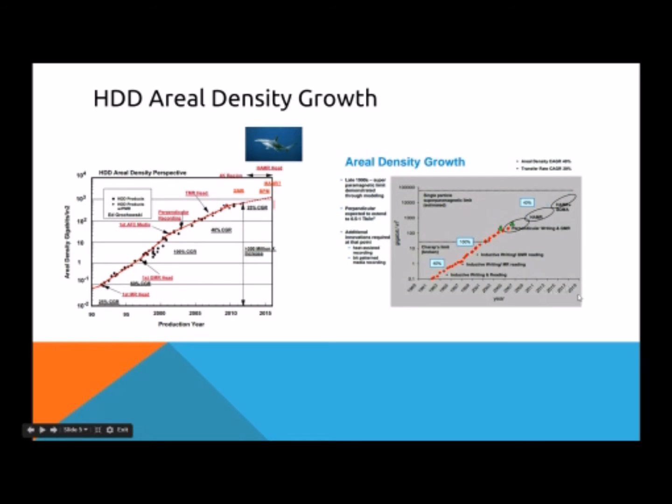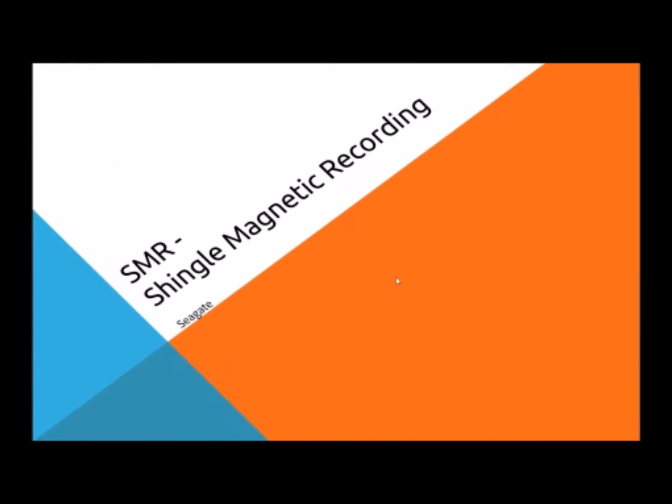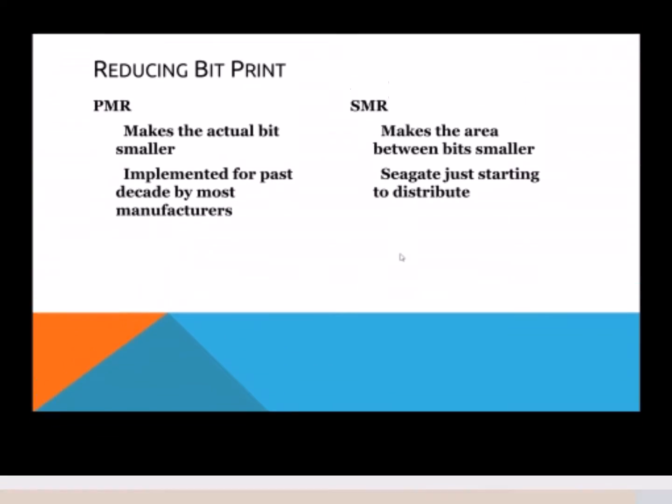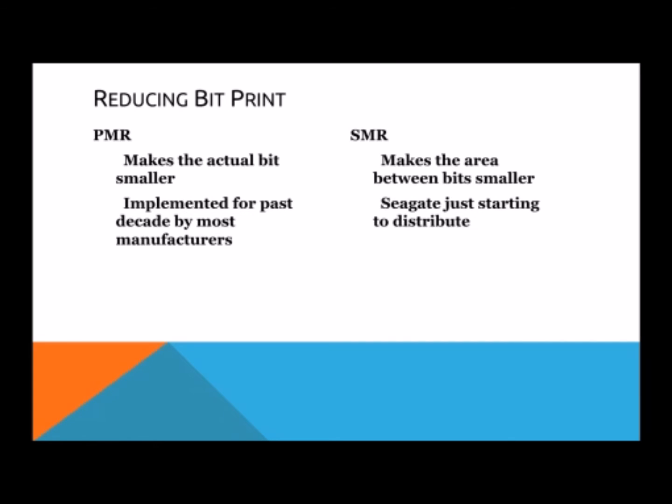We're going to talk about SMR, an abbreviation for shingled magnetic recording. The hard drive company behind this hard drive technology is Seagate. To increase the density of the bits on the hard drive we need to reduce the bit print or how much space a bit takes and the buffer zone around it. There's two ways to do this.